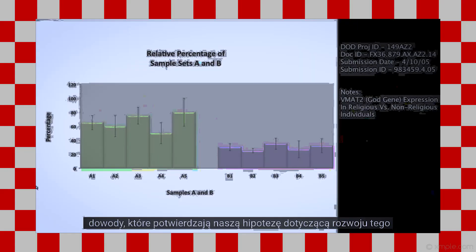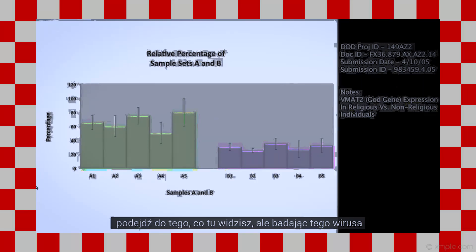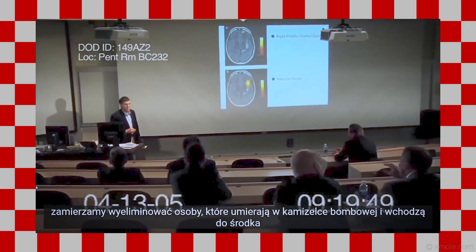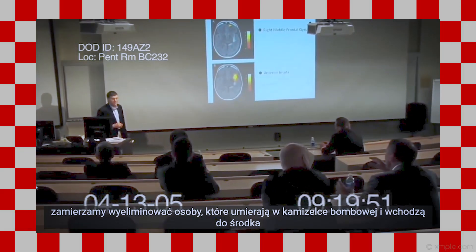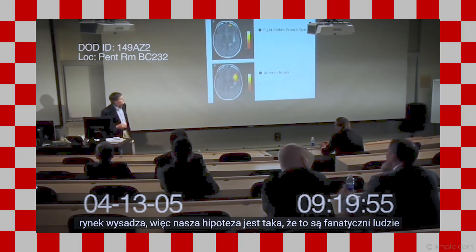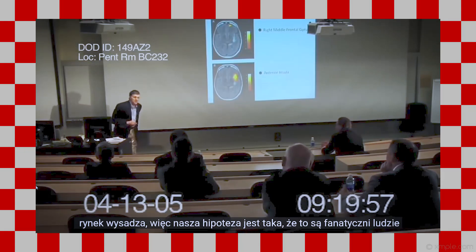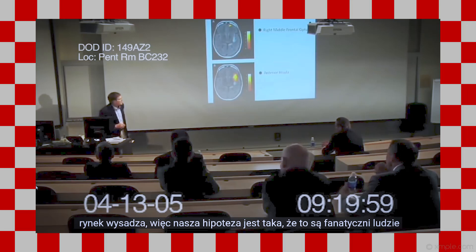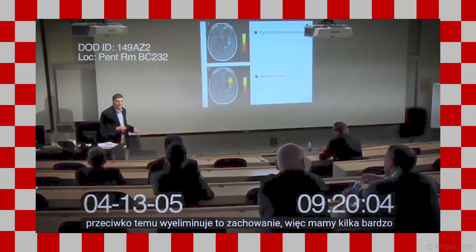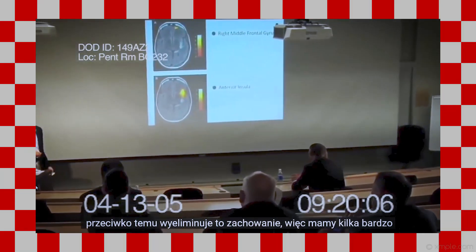Another evidence that supports our hypothesis for the development of this approach. What you're suggesting here is by spreading this virus, we're going to eliminate individuals from donning a bomb vest and going into a market and blowing it up. So our hypothesis is that these are fanatical people, that they have overexpression of the VMAT2 gene, and that by vaccinating them against this, we'll eliminate this behavior.